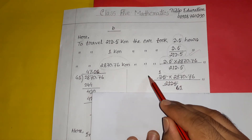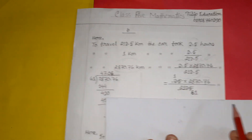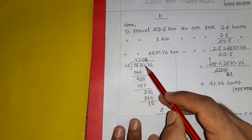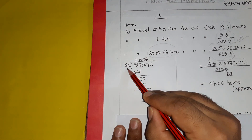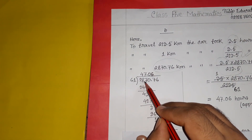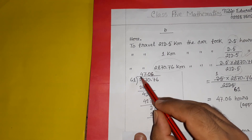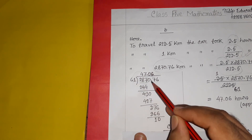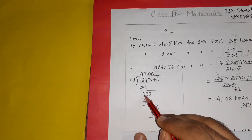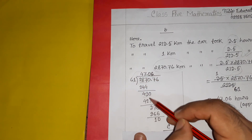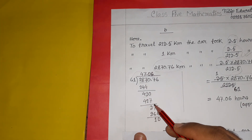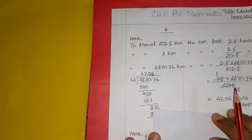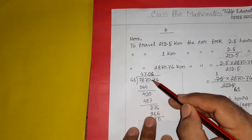We reduce the number by 61. We divide 2870.76 by 61. First we take 287, divide by 61 — that goes 4 times, giving 244. We subtract to get 43, then bring down the next digit 0, making 430. We divide 430 by 61 — that goes 7 times, giving 427. Subtracting gives 3. We bring down the next digit, giving 30, and divide by 61. This continues the long division process for 2870.76 ÷ 61.